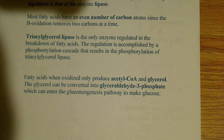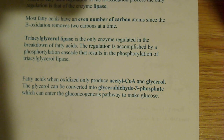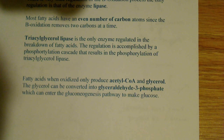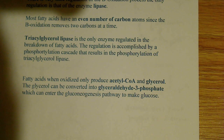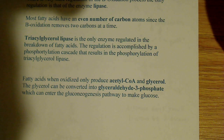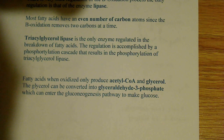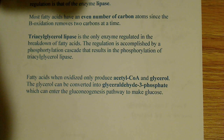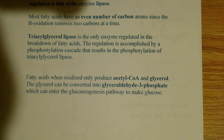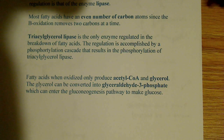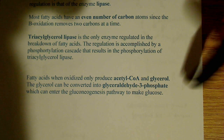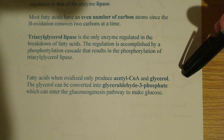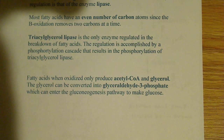The regulation of triacylglycerol lipase is accomplished by a phosphorylation cascade. A hormone signal binds to a receptor on the outside of the membrane, activating a cascade that results in phosphorylation of lipase, making it active and beginning beta-oxidation. This occurs when the cell needs energy — when there's a signal that ATP is needed. When fatty acids are oxidized, they produce acetyl-CoA and glycerol.